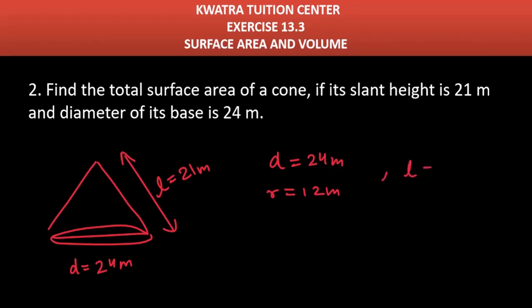So what will get us from radius? Radius value will be 12 meters for you. L will be 21 meters for you. Now we have to find TSA.